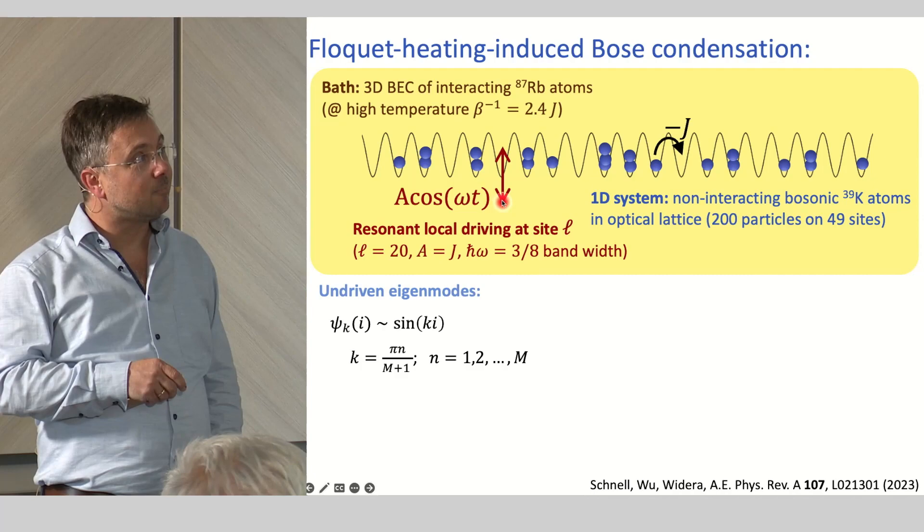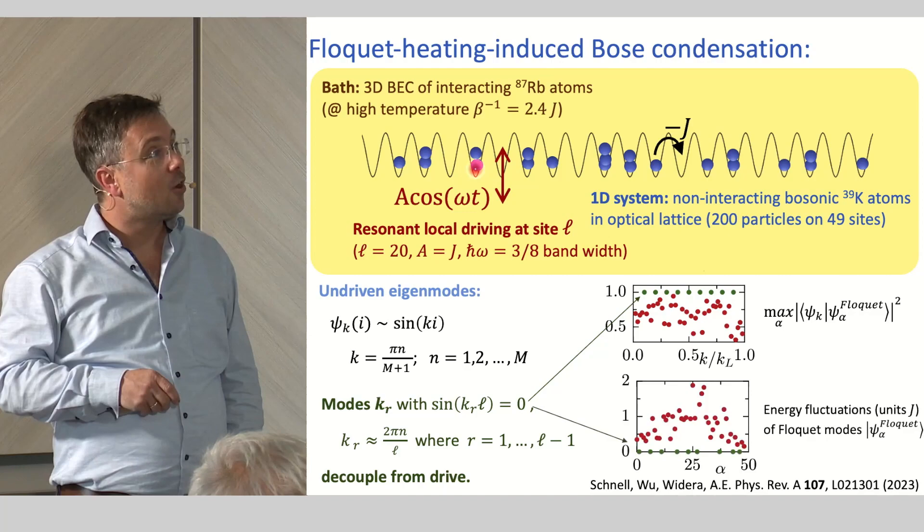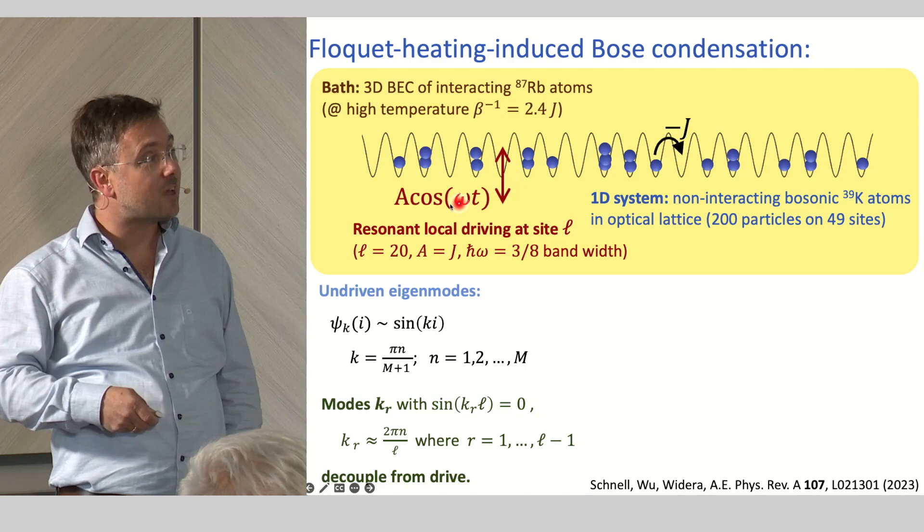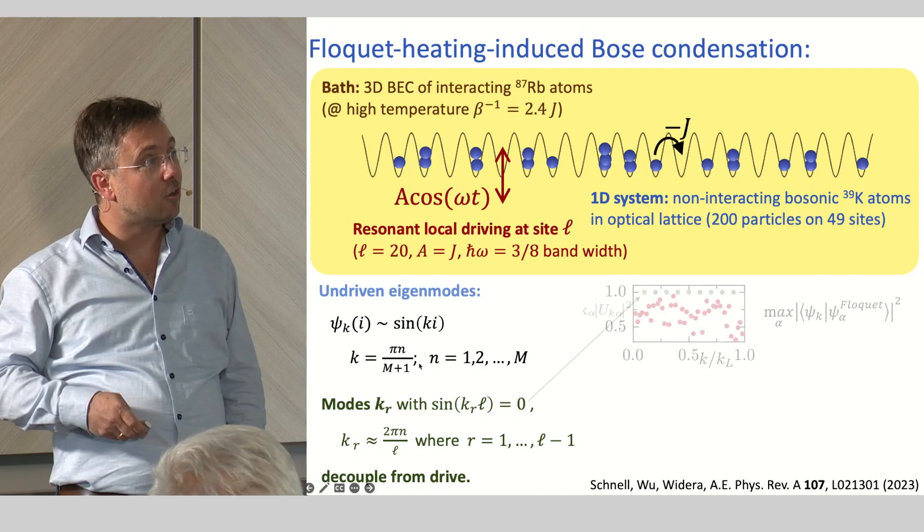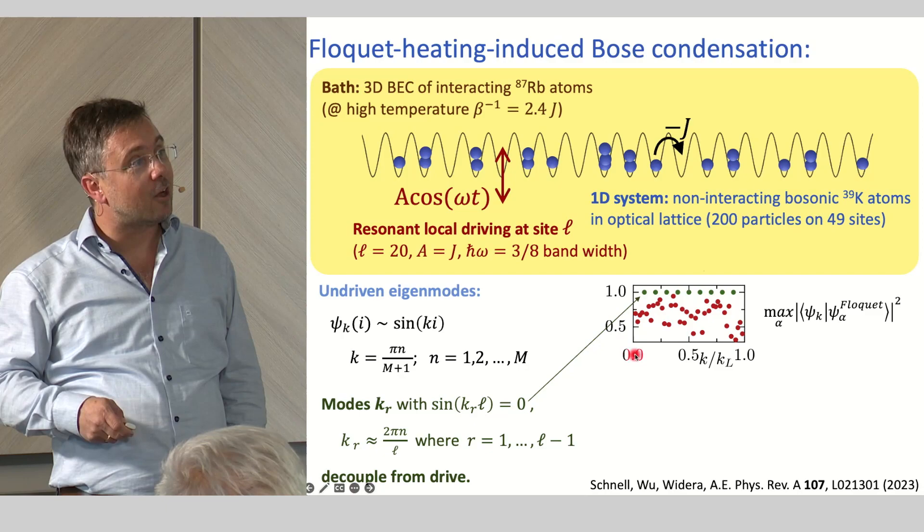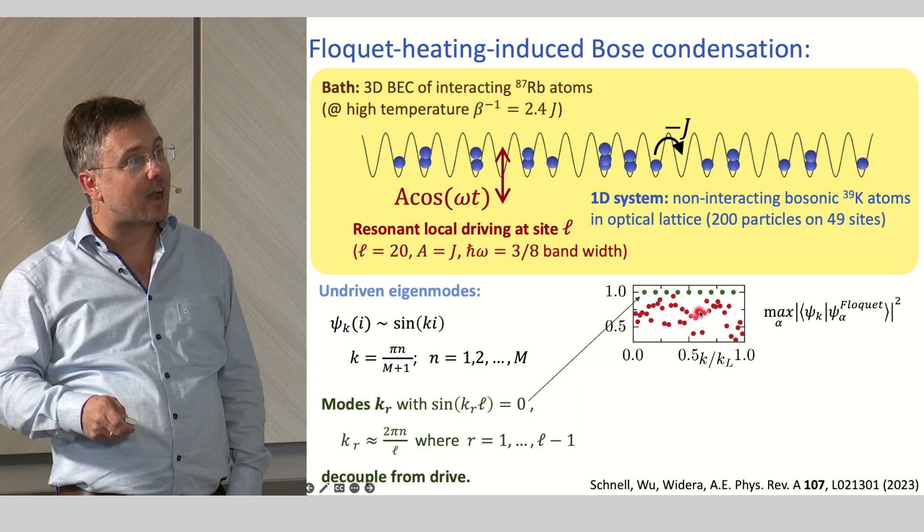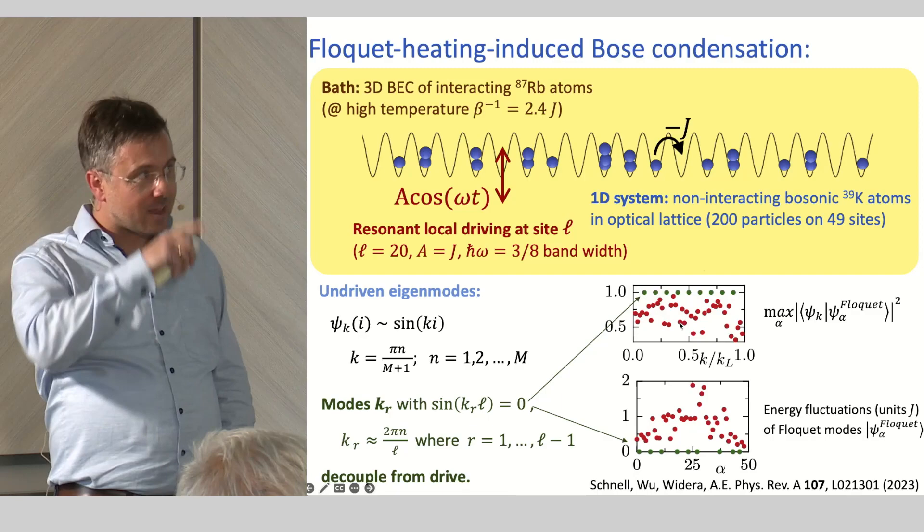And there is an intuitive explanation. When you drive locally here, there are some eigenmodes which you don't drive because these are the modes which have a node exactly on the lattice site where you drive. So some of the modes really decouple from the drive. They are not driven. Now you can look at the Floquet states of your system. This is the overlap of the Floquet states of the eigenstates of the undriven model with the Floquet states. You can clearly see there are these modes which have overlap one. So some of the Floquet states are actually the undriven eigenstates of the system which are not driven.